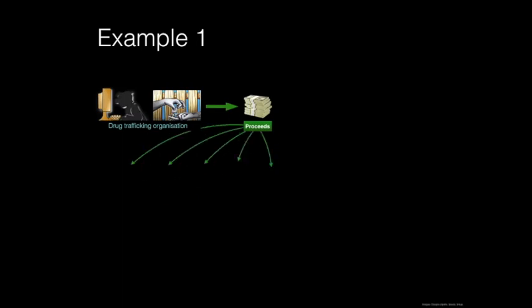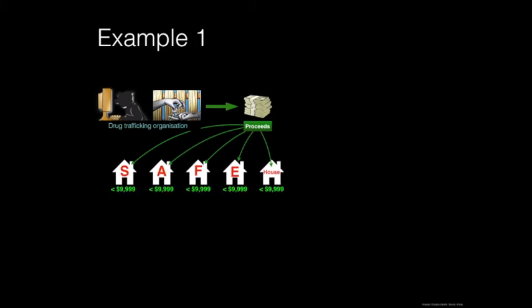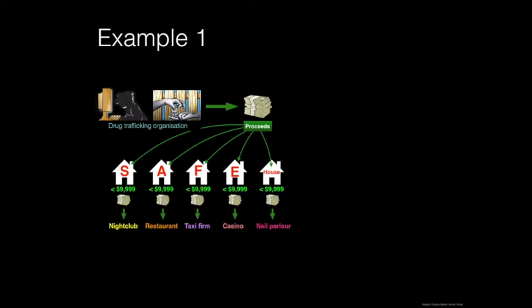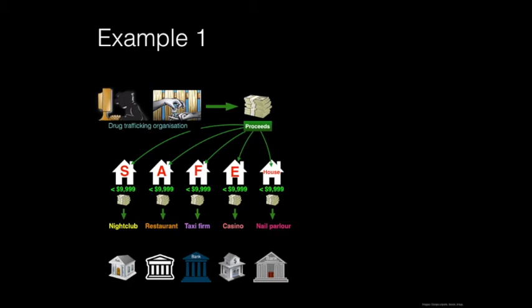Consider this example: a drug trafficking organisation in America sells drugs to street dealers in exchange for cash. The cash is accumulated in safe houses, collected by associates, and placed into cash-intensive businesses — nightclubs, restaurants, taxi firms, casinos, nail parlours — making it appear to come from legitimate sources. These businesses take a generous fee for this money-muling exercise. Associates then individually deposit batches of up to $9,999 in numerous bank accounts, staying under the $10,000 reporting threshold required by FinCEN.